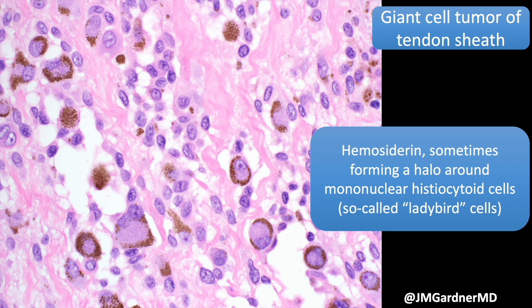Hemosiderin deposition is really common in tenosynovial giant cell tumors and in giant cell tumor of tendon sheath. Sometimes it arranges itself inside the plasmacytoid or rhabdoid histiocytoid tumor cells in a way that looks like a halo of hemosiderin around the outside of the cytoplasm. It's so beautiful — those are the coolest looking cells.